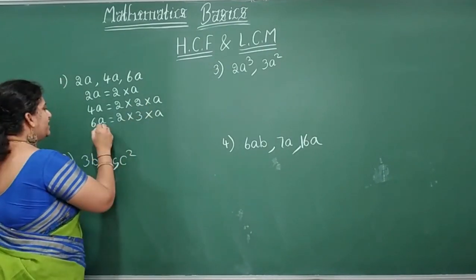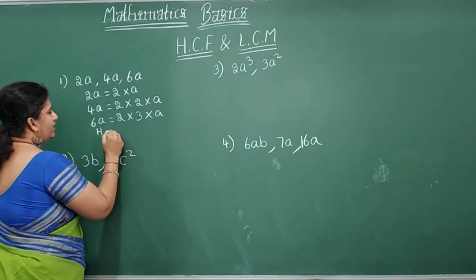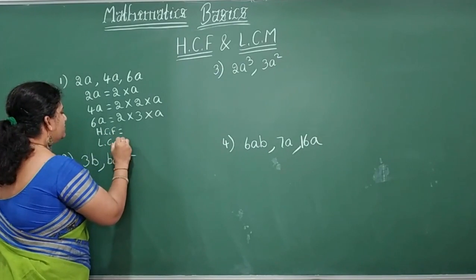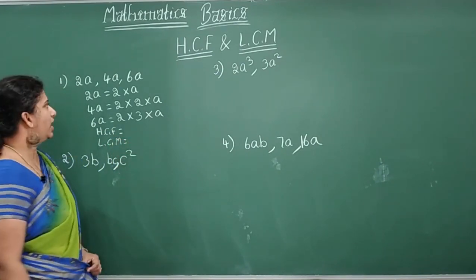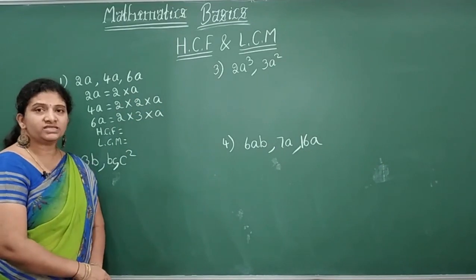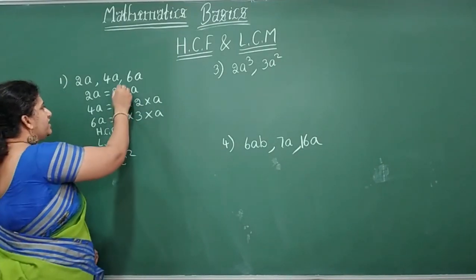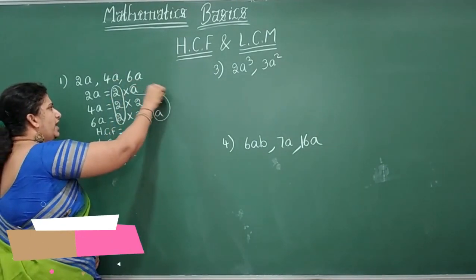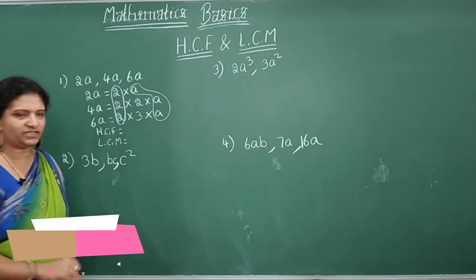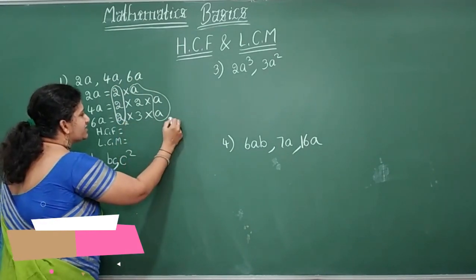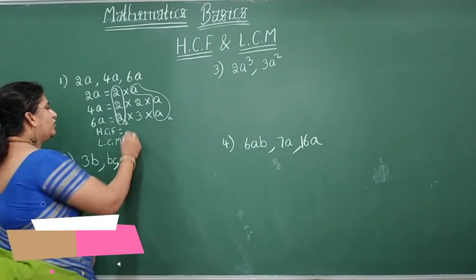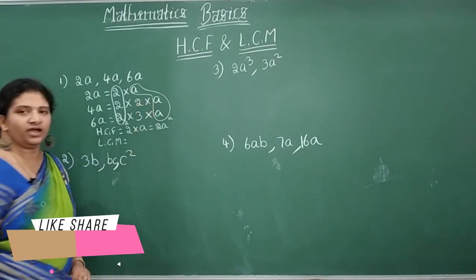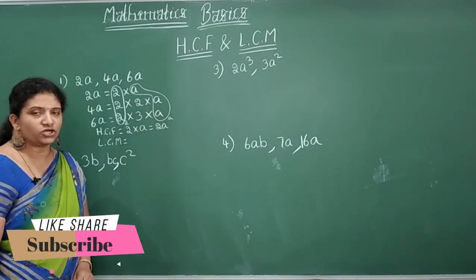Now HCF. Look here, HCF is equal to and LCM is equal to both. You need to see here. Now in all the three, what is common? You can see here, yes 2 is common and also A is common. Round it up and write here aside. So now when you are talking about HCF, 2 into A that is 2A is your HCF, highest common factor.